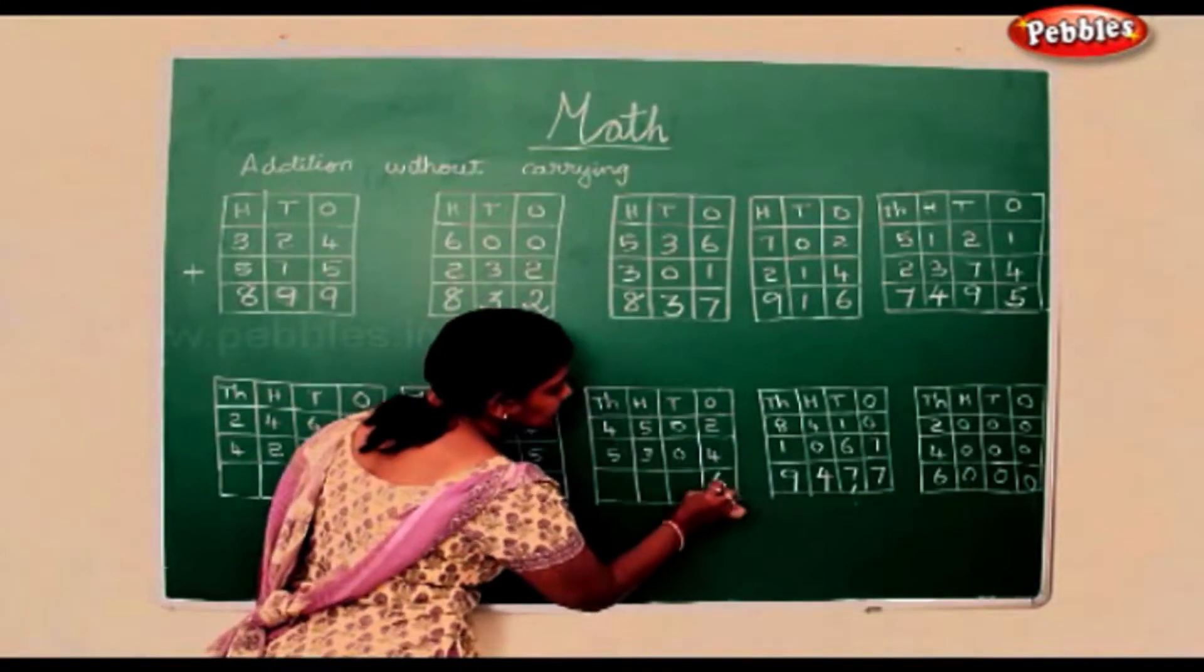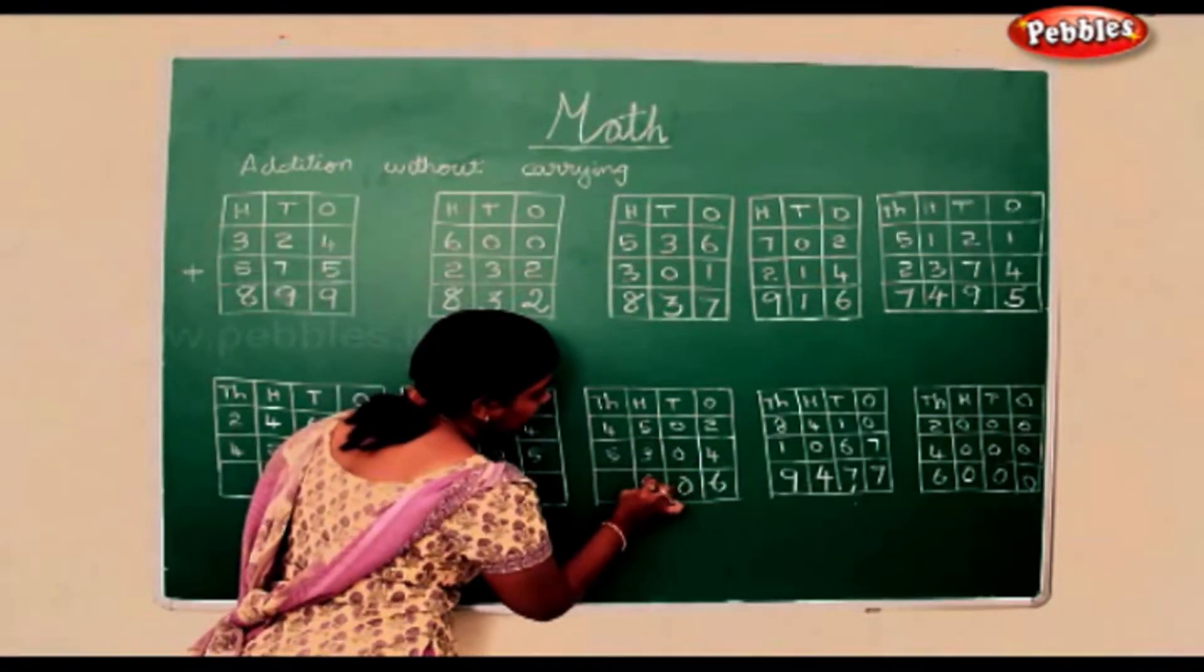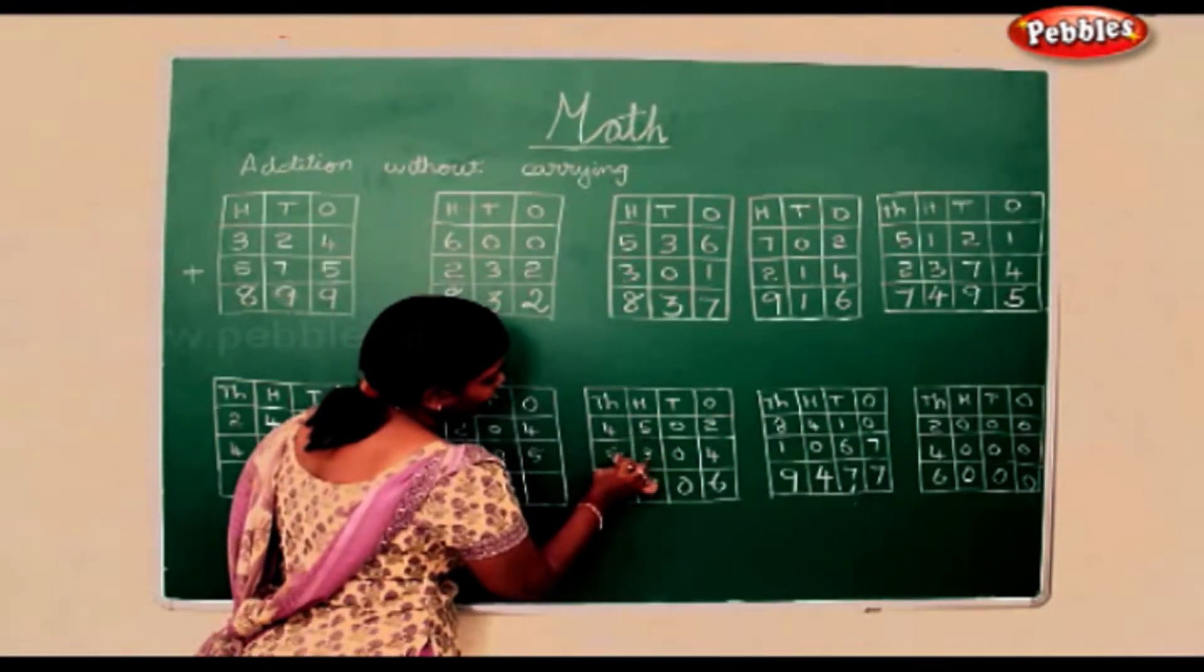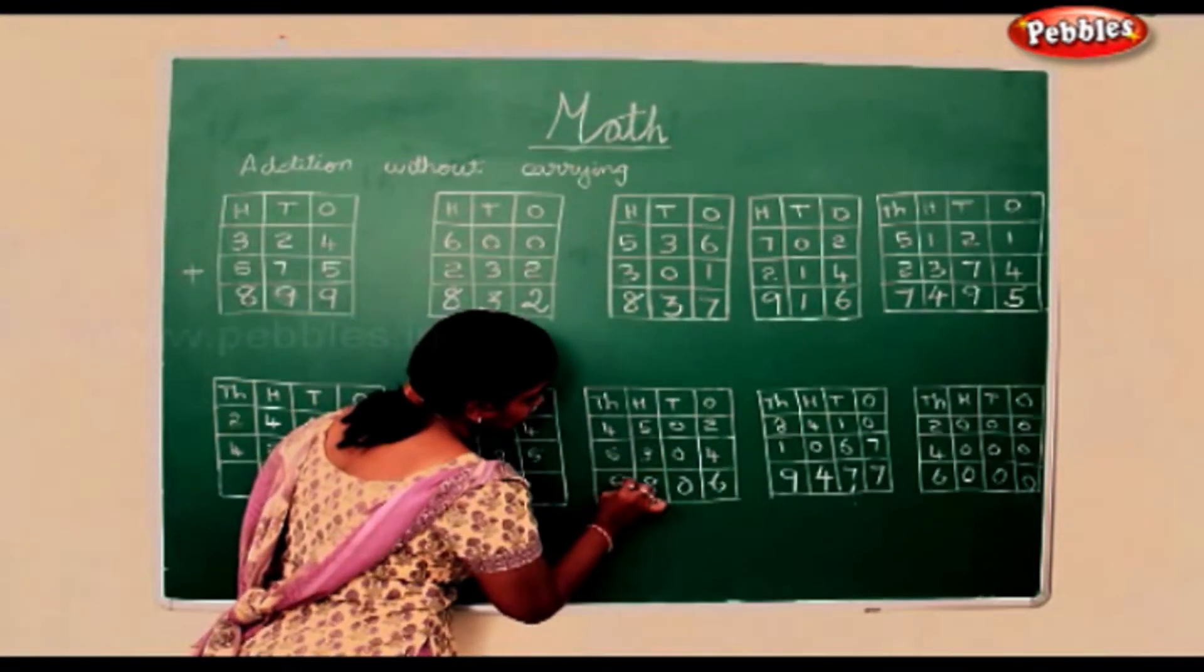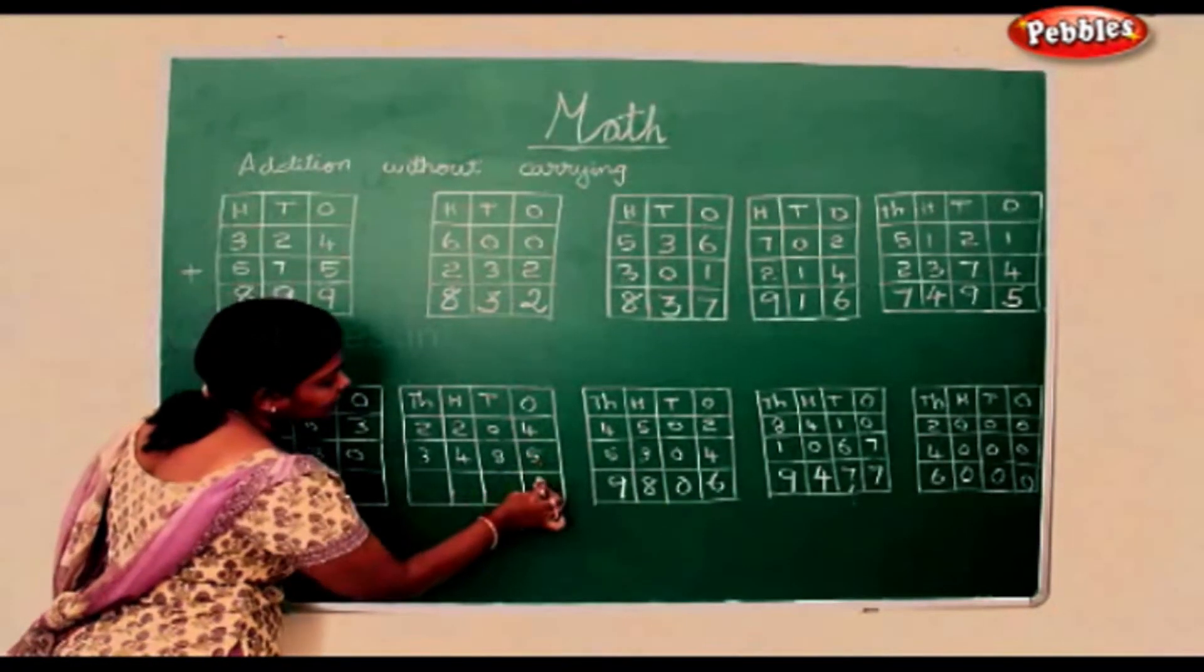0 add 0 is 0, 5 add 3 is 8, 5 add 4 is 9, 4 add 5 is 9.